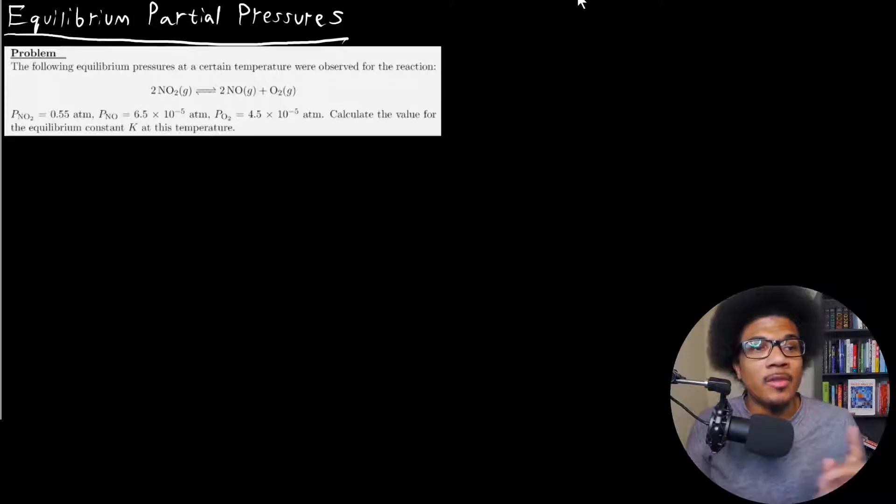So in this example, let's read through the problem first. The following equilibrium pressures at a certain temperature were observed for the following reaction. We got NO2 decomposing into NO and O2 gas.